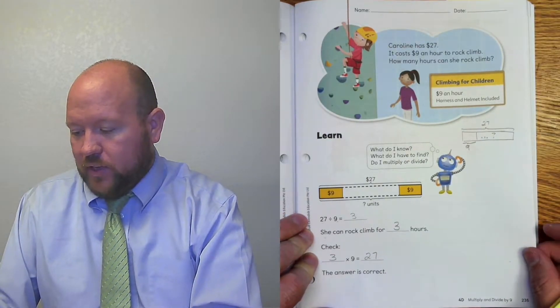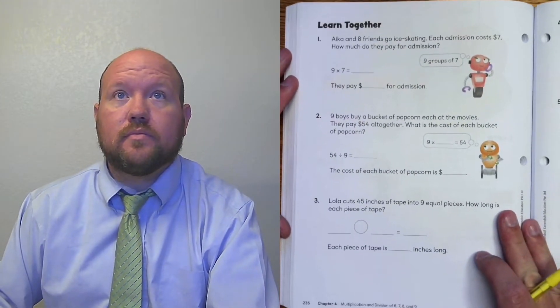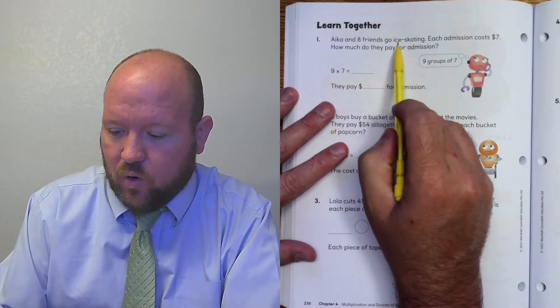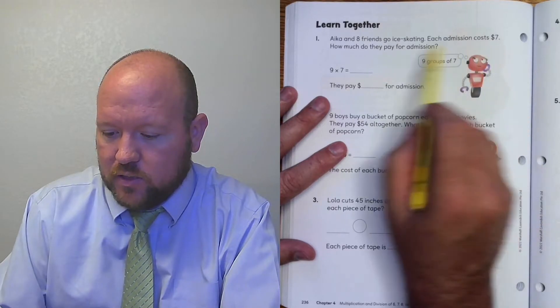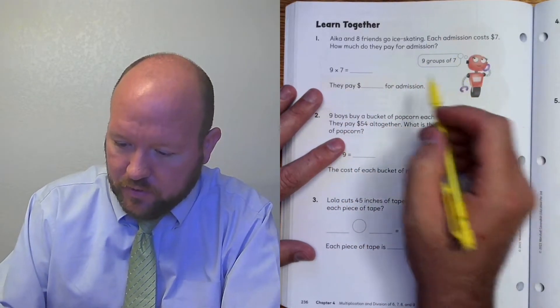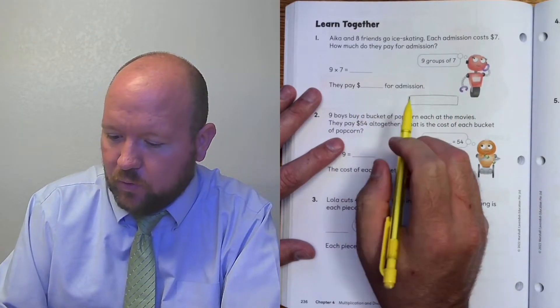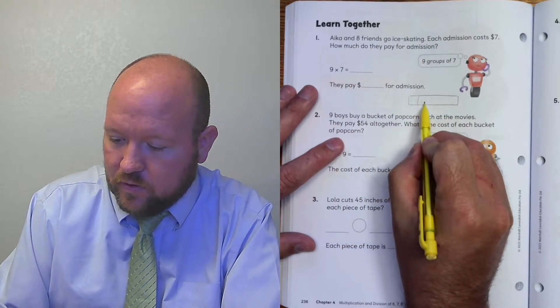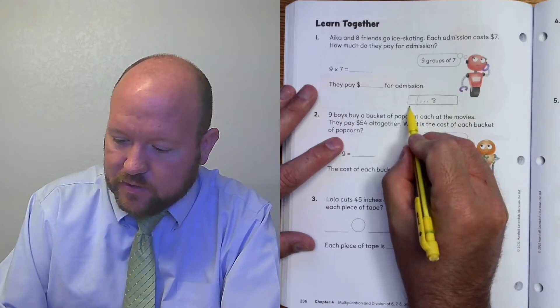Let's look at page 236. Aika and 8 friends go ice skating. Each admission costs $7. How much do they pay for admission? So let's model this. The book doesn't have a model for all these, but we want to model all of them. So she has 8 friends, 8 groups, admission costs $7.